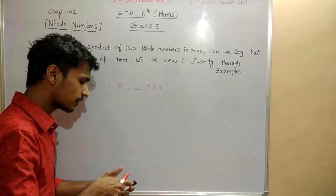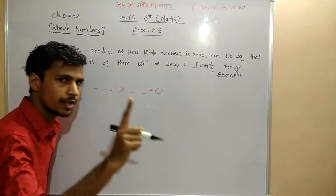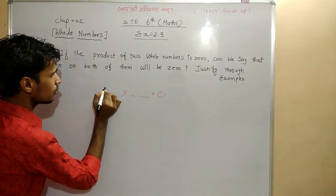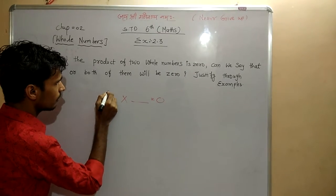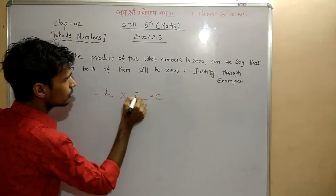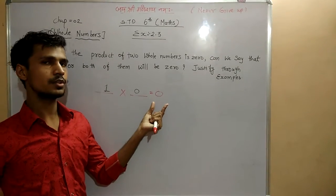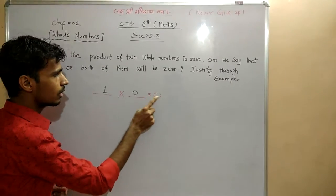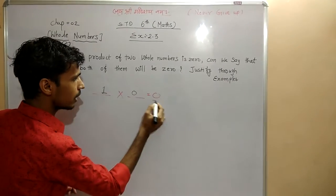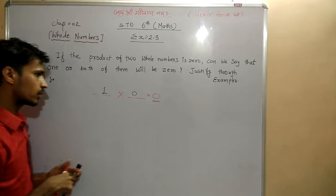So let's take an example. If I am taking one value as 1 and second value as 0, so my answer is 0. Because any number multiplied by 0 gives us 0.